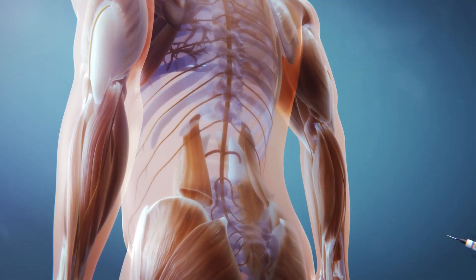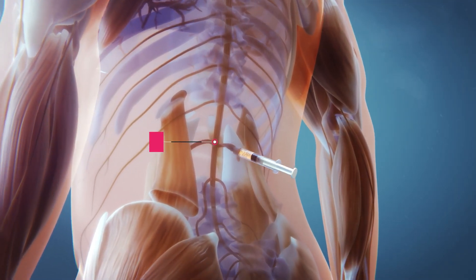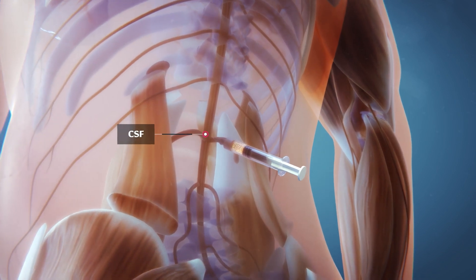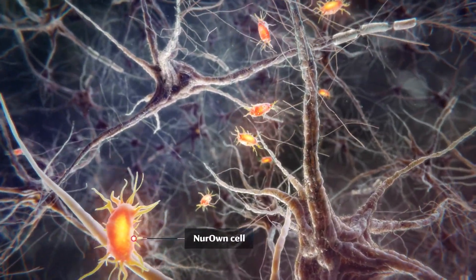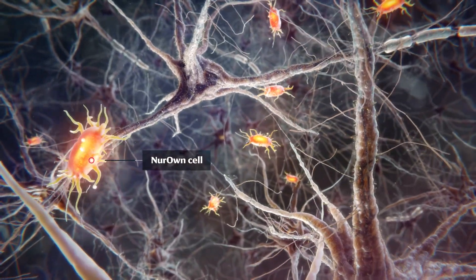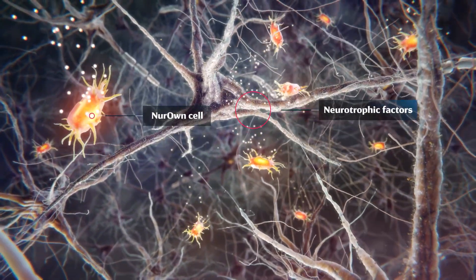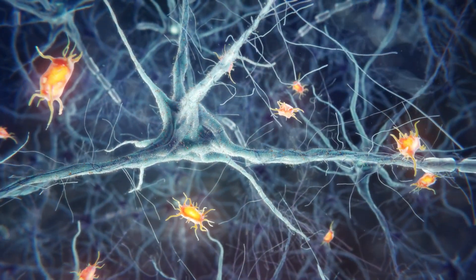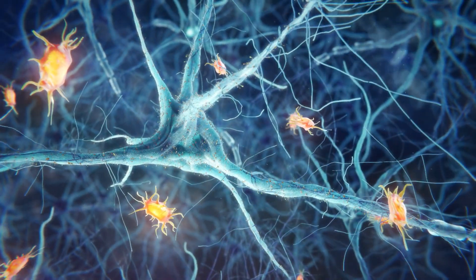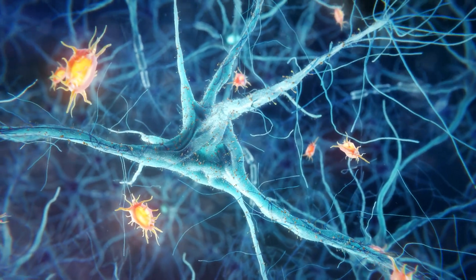A lumbar puncture delivers neuron cells back into the patient via the cerebrospinal fluid (CSF). The cells travel within the CSF throughout the brain and spinal cord to support nerve cells and dampen inflammation. Patients in clinical trials receive treatment every two months with the goal of delivering continuous benefit.